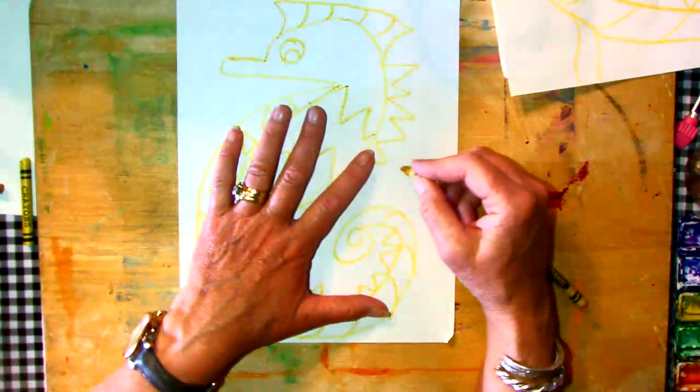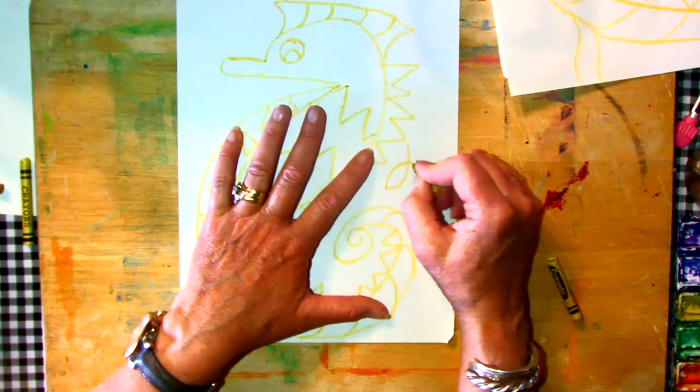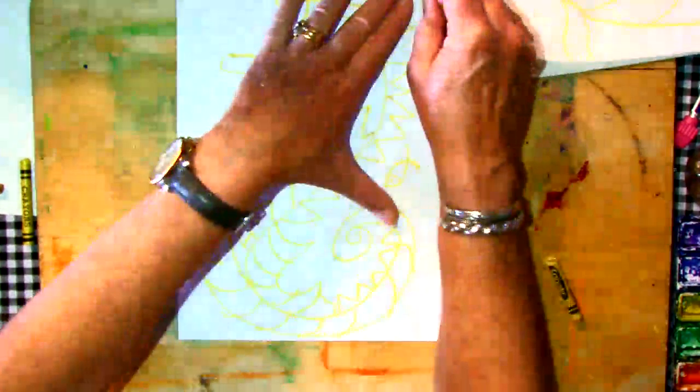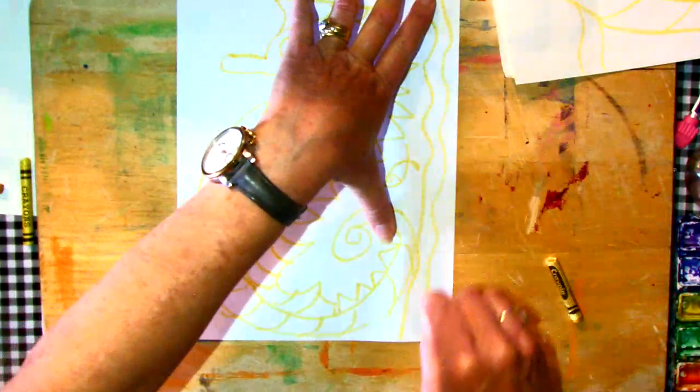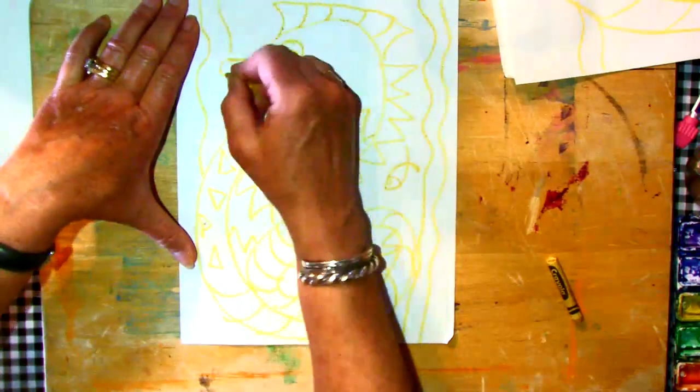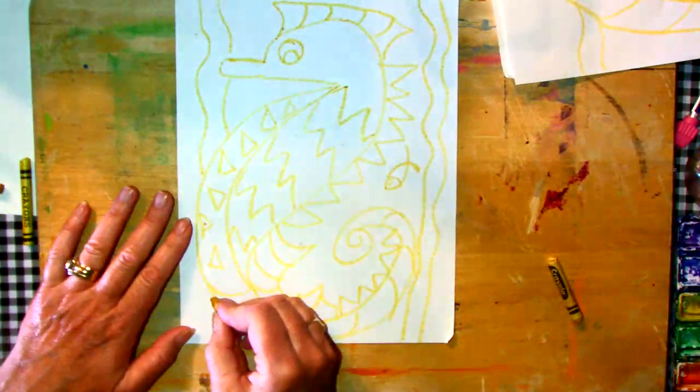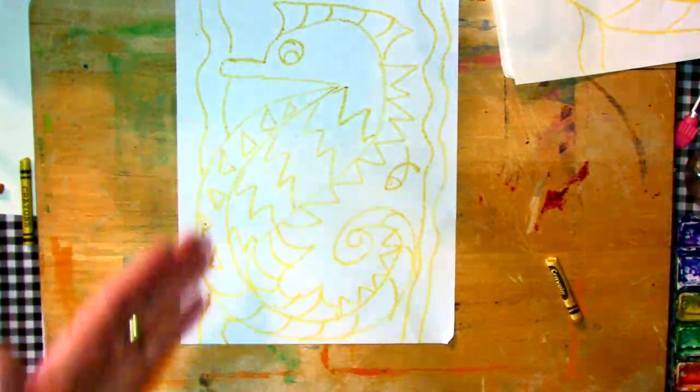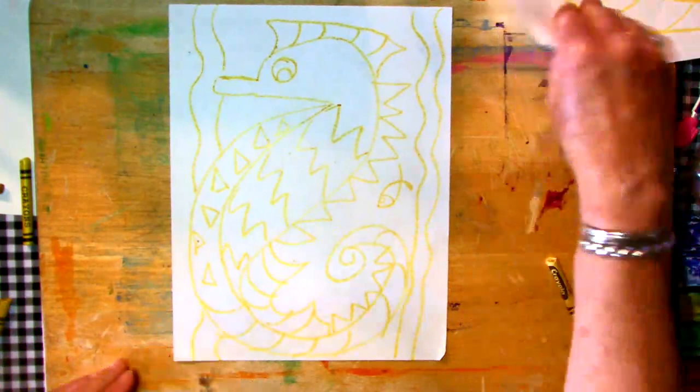We could do a simple fish. Just go rainbow line, rainbow line, and give it a head. And how about some seaweed? Just make some curvy lines, make them follow like a road. When you bump into your seahorse, stop drawing so that you don't draw through your seahorse. You want your seaweed to be behind.